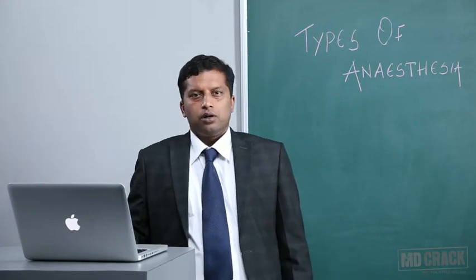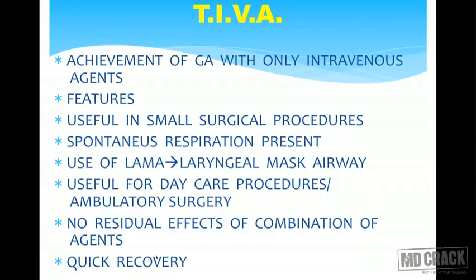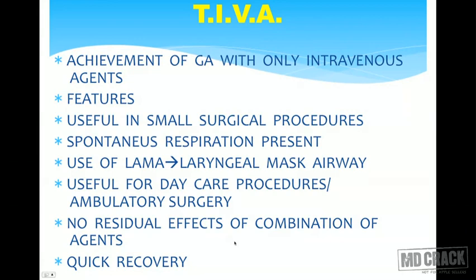Welcome back. In this module, I am going to talk in detail about general anesthesia. General anesthesia consists of analgesia plus amnesia plus total loss of consciousness. There are three types of general anesthesia: TIVA or total intravenous anesthesia, GA with spontaneous ventilation, and GA with controlled respiration.